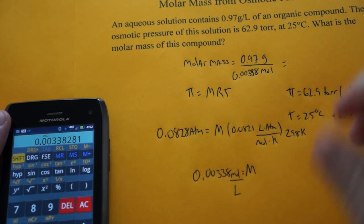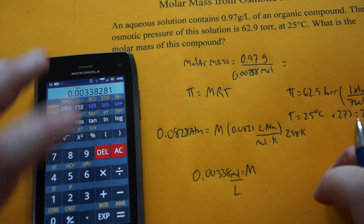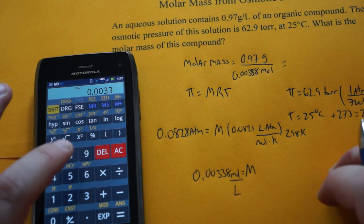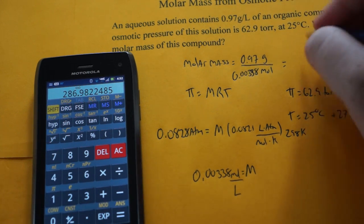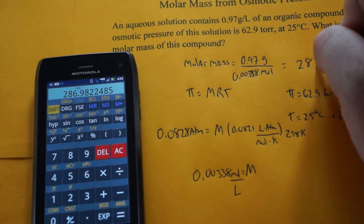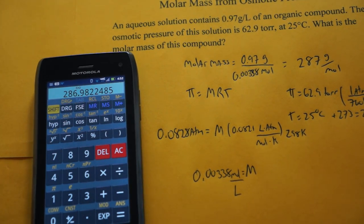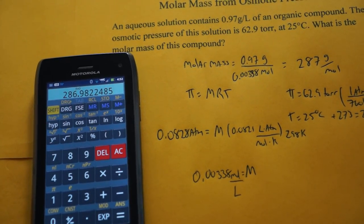0.00338 moles per liter. So you just take 0.97 divided by 0.00338 and we get a molar mass of 287 grams per mole. And that's how you use osmotic pressure to find molar mass.